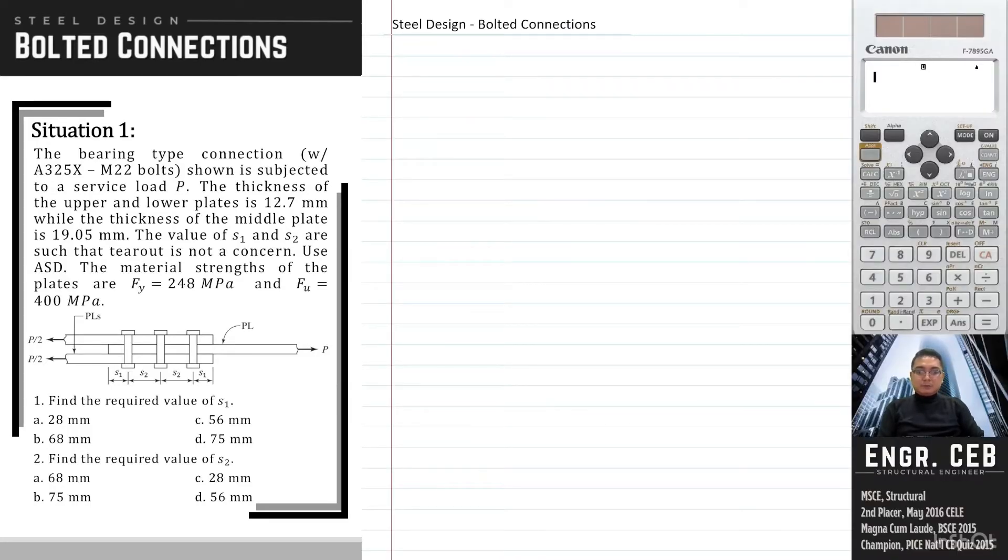Now we will write the formulas for the nominal strength. For bearing deformation, we have Rn equals 2.4dtFu. And then for tear-out, Rn equals 1.2LctFu. Take note that the governing limit state is always the minimum. So meaning, for these two, whichever is the lesser value will govern.